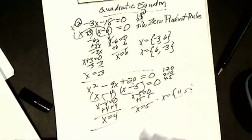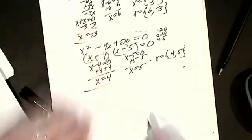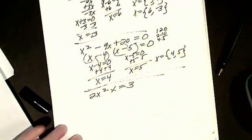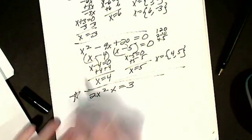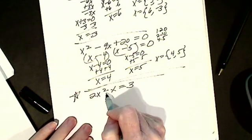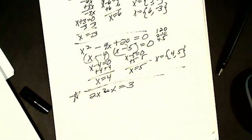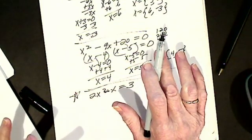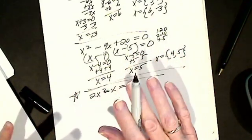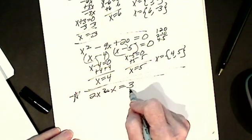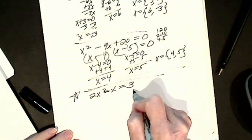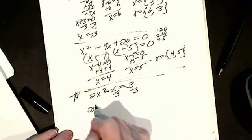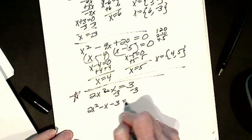Now we have one step up — the biggest step up. If I have one like this: 2x squared minus x equals 3. I have my squared, and there's a minus in here. The problem is the previous examples came out easily because they equaled 0. So if I have a quadratic equation that equals 0, fabulous. If it doesn't, I make it equal 0. What would I do to this side to get a 0? I'd subtract 3. What I do to one side, I do to the other side. So I'm left with 2x squared minus x minus 3 equals 0.